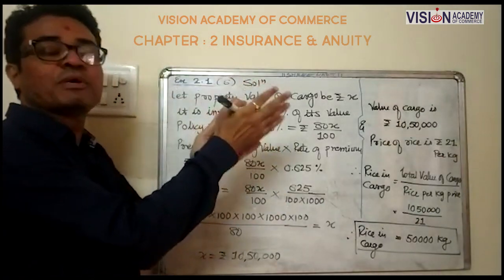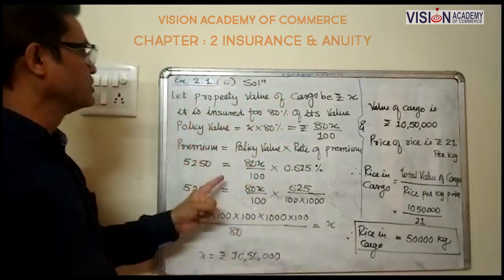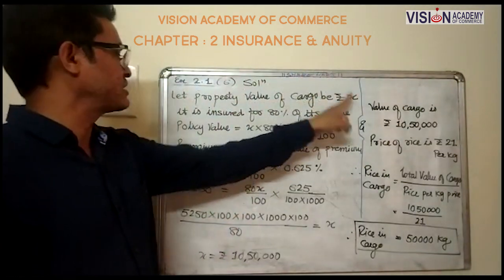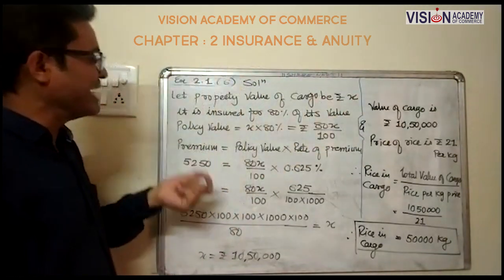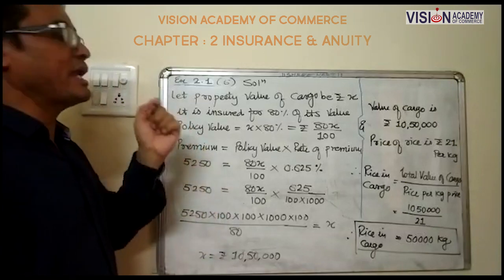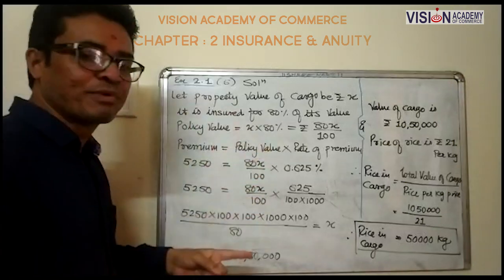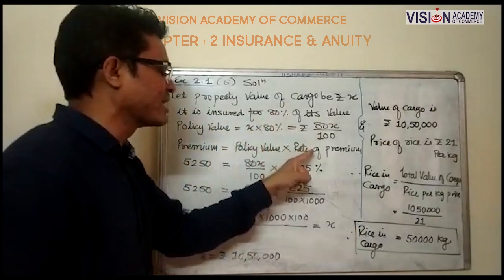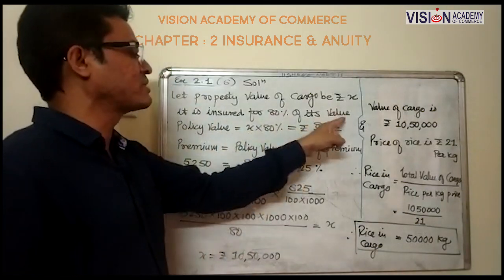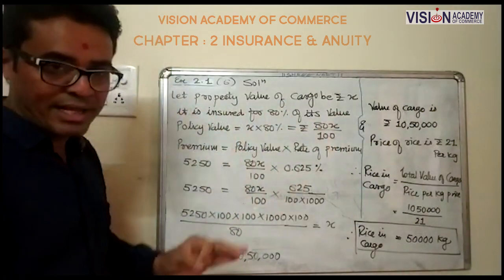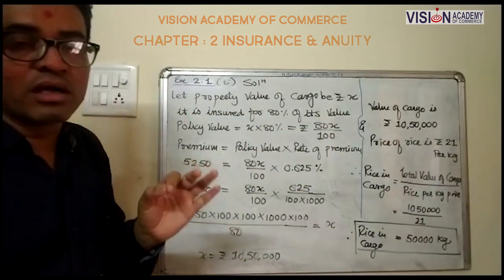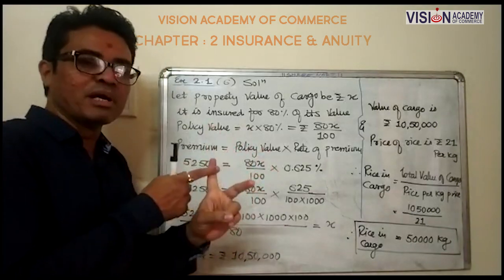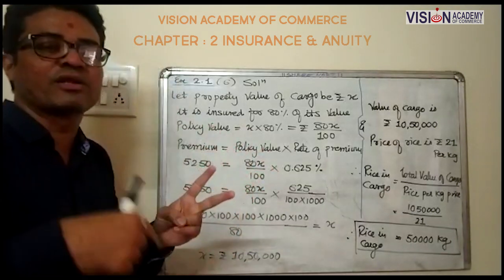In this question we are not given the property value of the cargo, so first we assume property value of cargo as rupees x. It is insured for 80 percent of its value, so policy value equals x into 80 percent, which comes to 80x upon 100. In the question, both premium amount and rate of premium are given.